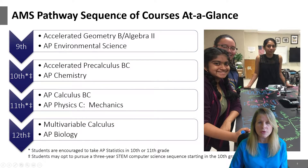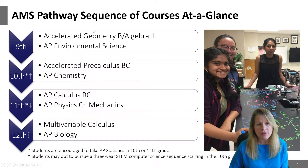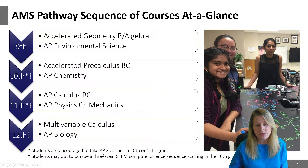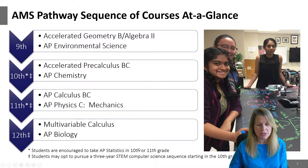Here's an overview of the courses for the four years in the AMS program. Again, there are two classes required each year. We're listing out the ninth grade courses, tenth, eleventh, and twelfth. I do want to point out that we recommend students take AP Statistics in either the tenth or eleventh grade, to prepare them for their senior research projects. The statistics course will come in handy there.